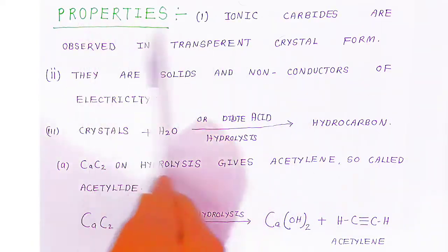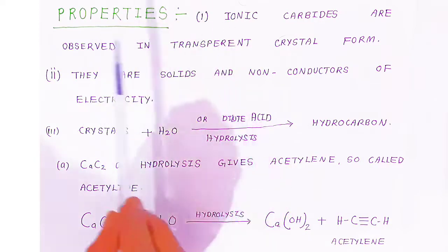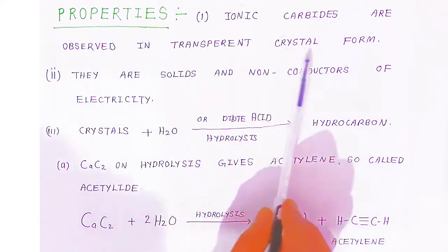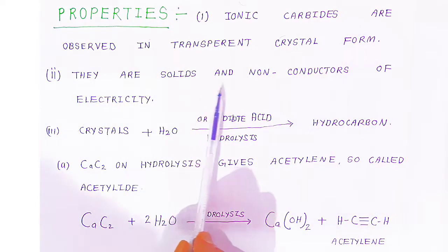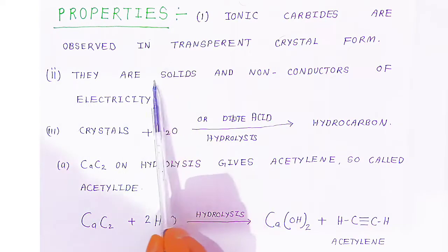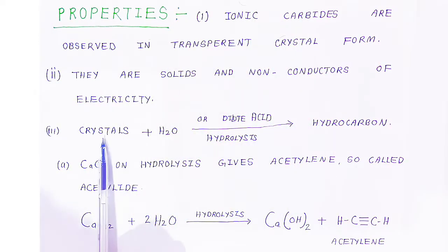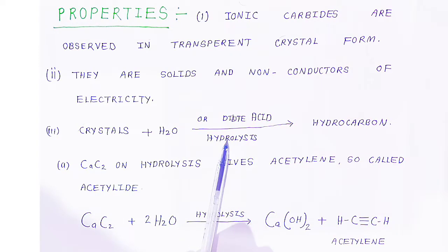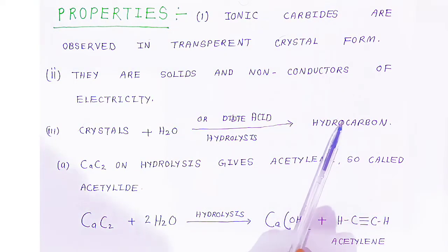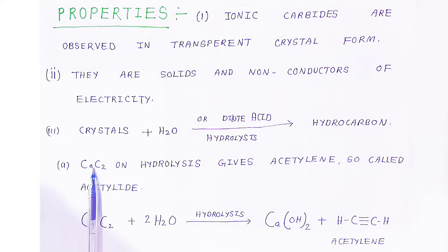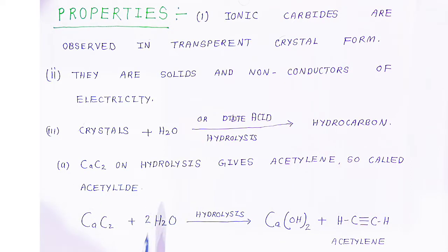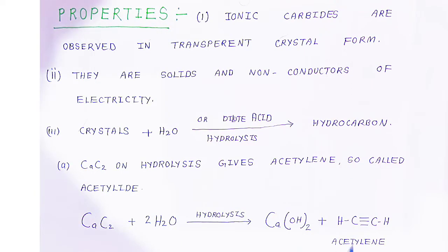Now we are going to see the properties of ionic carbides. Ionic carbides are observed in transparent crystal form. They are solid and non-conductors of electricity. When crystals of ionic carbides react with water or dilute acid, hydrolysis takes place and these crystals convert into hydrocarbons. For example, calcium carbide on hydrolysis gives calcium hydroxide and acetylene (C₂H₂) — a carbon-carbon triple bond compound — so calcium carbide is called an acetylide.